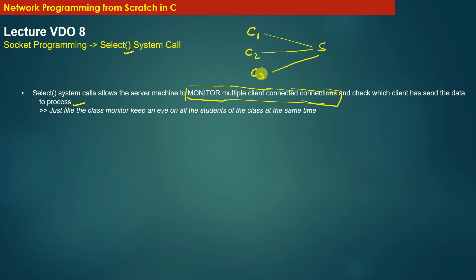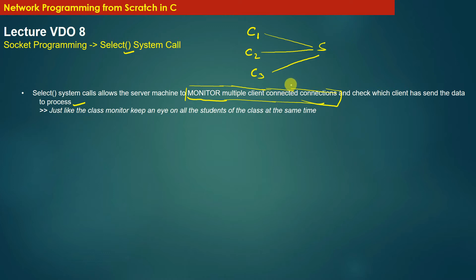In whatever order or sequence any of these clients sends data to the server S, the server S will be in a position to identify which client has sent data and which client needs a service. So the select system call helps the server S achieve simultaneous monitoring of connected clients.